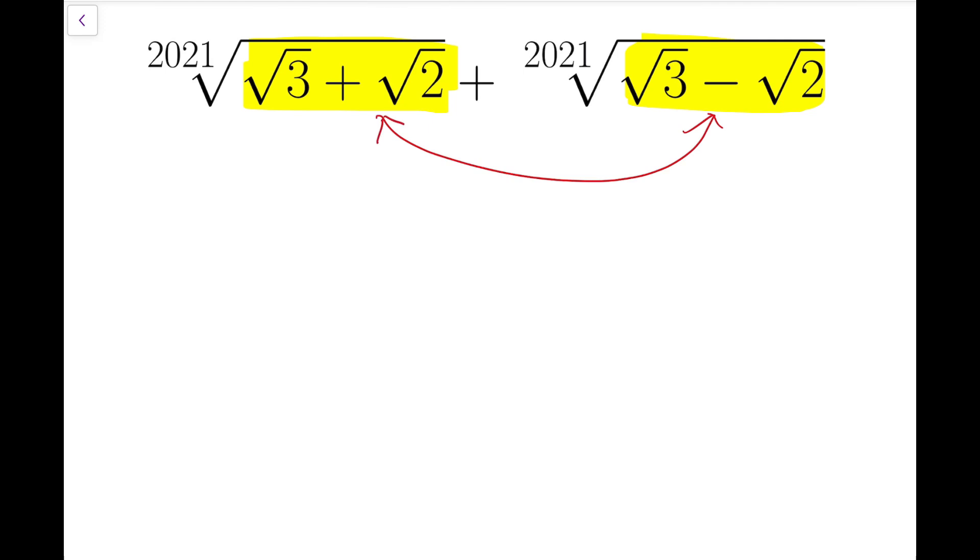Whenever we see some numbers like this, this gives a slight chance for this number to become a rational number.